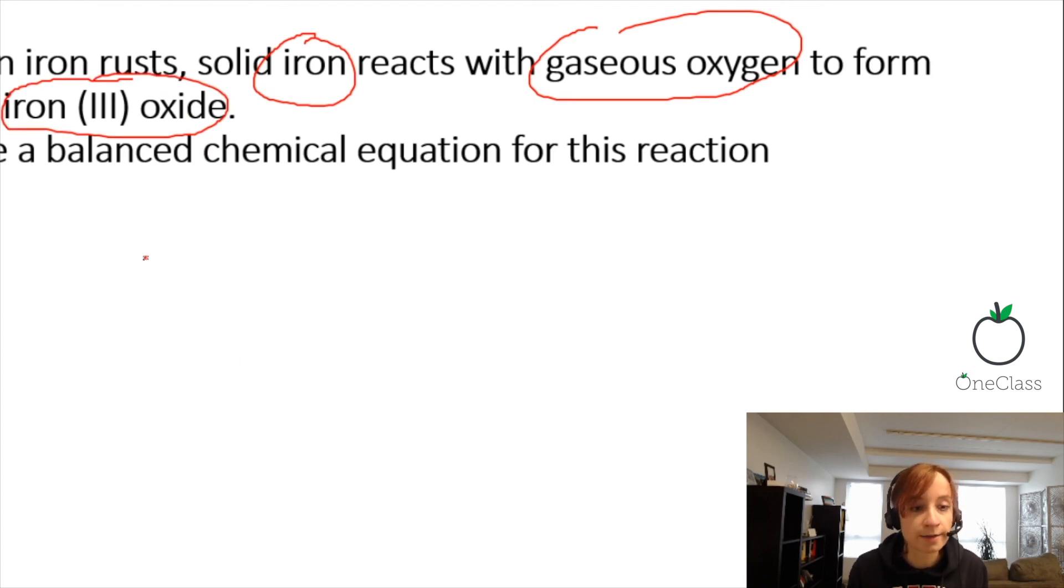So solid iron just means it is the element iron on its own. That's it. It's solid, like it said in the question. It's good to include the states of matter as well, especially if they are given to you in the question.